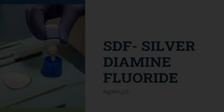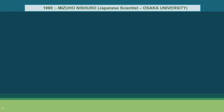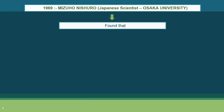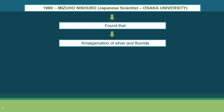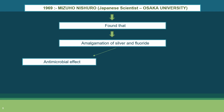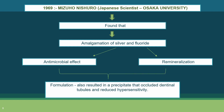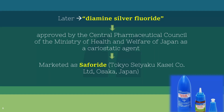Now let's come to the star of the show itself — SDF. In the year 1969, a Japanese scientist named Mizuho Nishuro from Osaka University found that the amalgamation of silver and fluoride proved to be beneficial for the teeth, with silver giving the antimicrobial properties and fluoride presenting its remineralizing properties. Together, this formulation also resulted in a precipitate that could occlude dentinal tubules and help with hypersensitivity. Diamine silver fluoride was then approved by the Central Pharmaceutical Council of the Ministry of Health and Welfare of Japan as a carostatic agent, marketed under the name Sephoride.